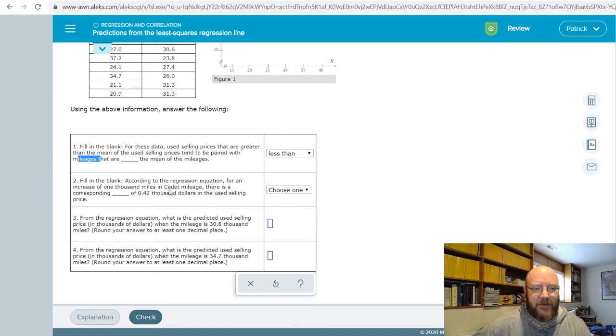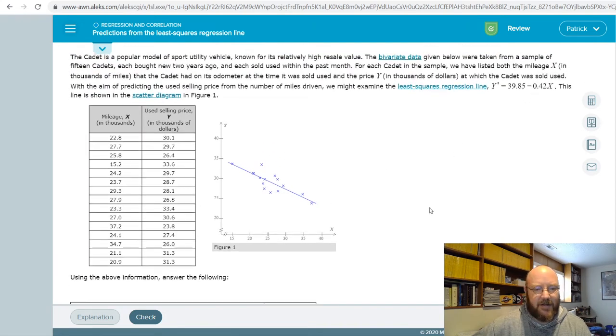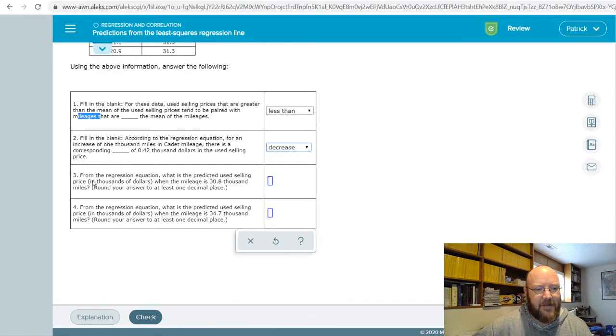Fill in the blank. According to the regression equation for an increase of 1,000 miles, there is a corresponding decrease. We know that's a decrease because this slopes down. And if we take a look at the regression equation, the slope is negative now. So we know it's a decrease.